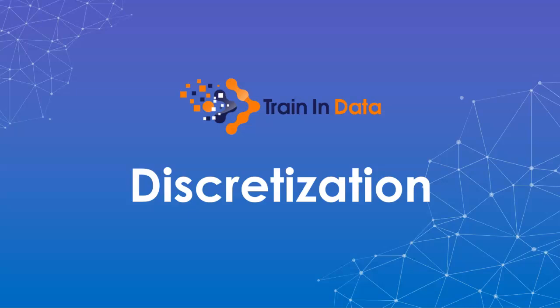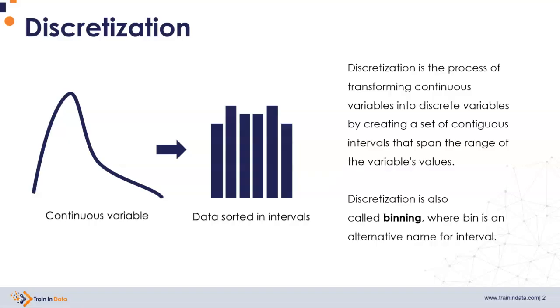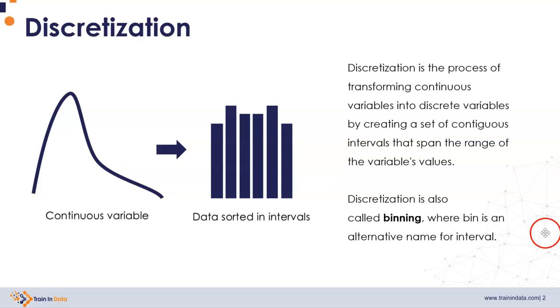Welcome to a new section on variable discretization. Discretization is the process of transforming continuous variables into discrete variables, and we do so by creating a set of continuous intervals that span the value range of the variable.